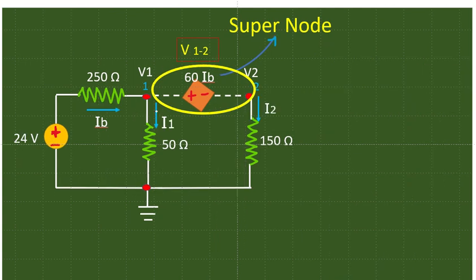Now we are marking the currents. From first node we can mark the current as i1 which is flowing towards this reference node. Similarly from the second node, the current i2 is leaving the node, since we have to apply nodal analysis.